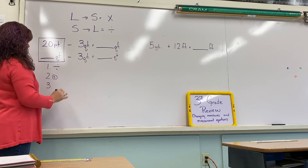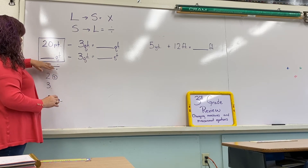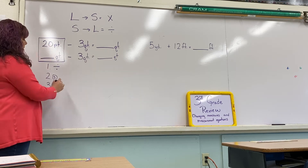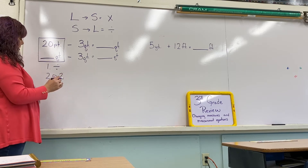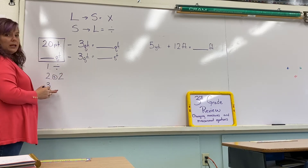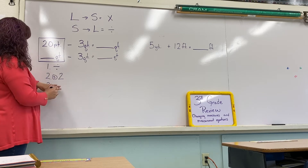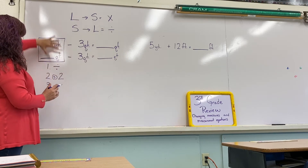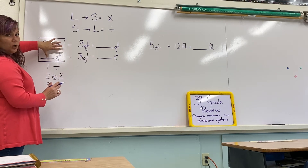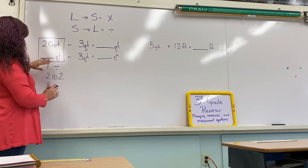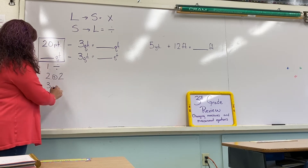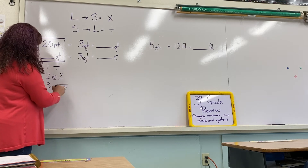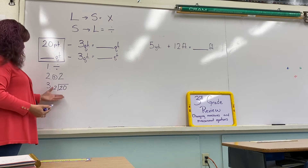Step two is our special number — what number are we going to divide by? How many pints are in a quart? Yes, two — there are two pints in a quart. Step three is where we write our problem using only the numbers in the box. We're not looking at the other side yet. So we have 20 divided by 2.